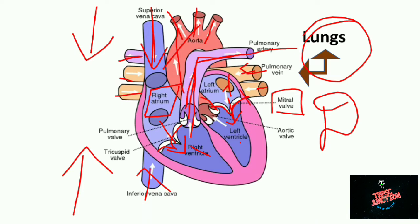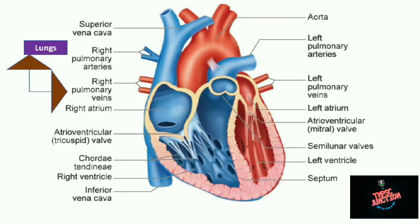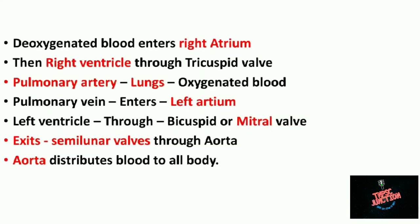So this is the overall concept of how blood circulation works in the heart — from deoxygenated blood entering the right side, going to the lungs, becoming oxygenated, returning to the left side, and finally the aortic valve distributing it throughout the body. This is an image from the book; you can refer to it.